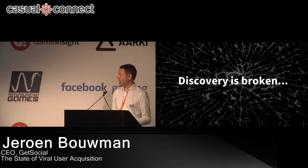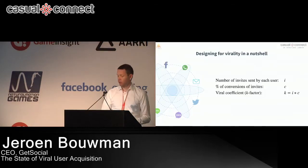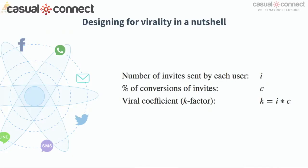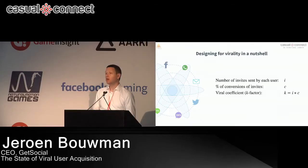So how to design for virality briefly. Virality is effectively K-factor — your viral coefficient. It's the amount of invites sent by each user multiplied by the conversion of those invites. That will get you your K-factor. That number is something you can influence by increasing the amount of users that interact, the amount of invites they send, or the conversion of those invitations.